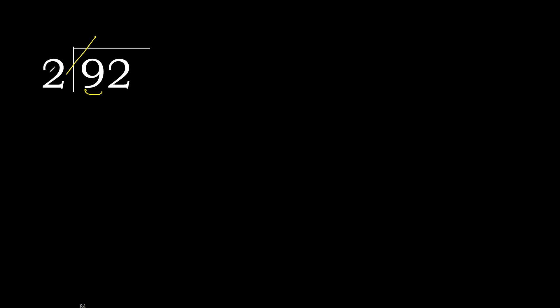2 multiplied by 5 is 10 — 10 is greater, so that's too big. 2 multiplied by 4 is 8 — it is not greater, so we use 4. 9 minus 8 is 1.